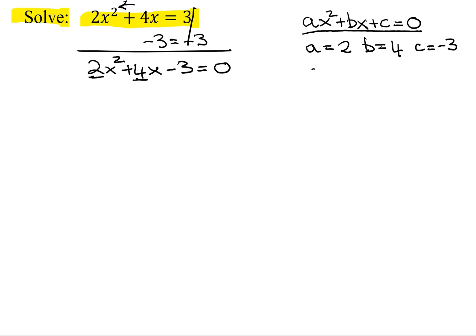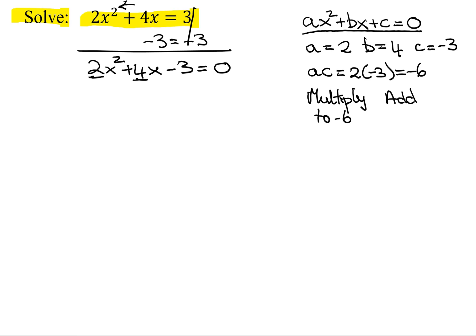So if I want to try to factor it, what I have to do is multiply a times c. That's 2 times negative 3, which is negative 6. So I'm looking for two numbers that multiply to ac, which is negative 6, and then they have to add to b, which is 4. Since they multiply to a negative, the signs are different, and since they add to a positive, the bigger one has to be positive.